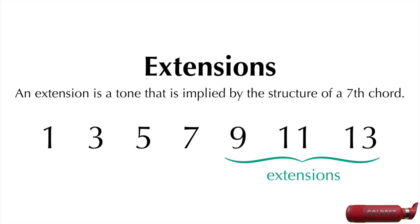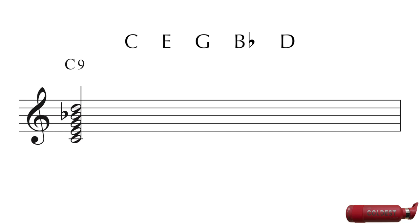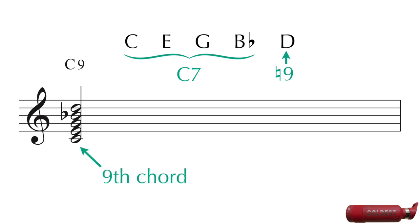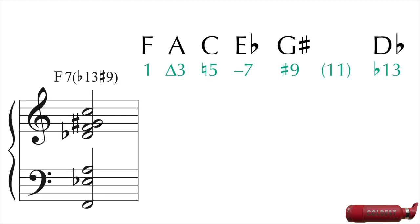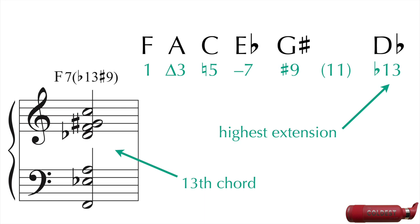Chords are often referred to by their highest numbered extension. For example, take the following chord. Here we have a C dominant 7th chord with the 9 as an extension. Since the highest numbered extension is the 9, we can refer to this chord as a 9th chord. Similarly, if we have an F7 flat 13 sharp 9 chord, the highest numbered extension is 13, so this can be called a 13th chord.